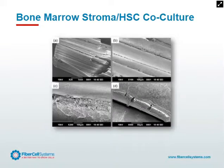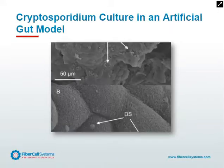We also have a co-cultivation where we put bone marrow stroma onto the fibers, then put hematopoietic stem cells on the outside of the fiber. Dr. Mai Sari Lim found that hematopoietic stem cells cultured in this environment grafted more rapidly when injected into SCID mice.